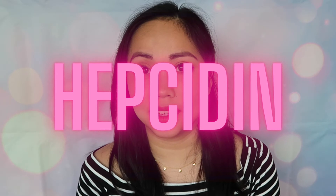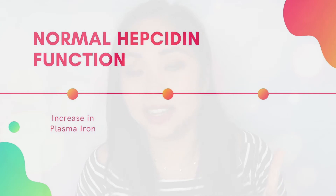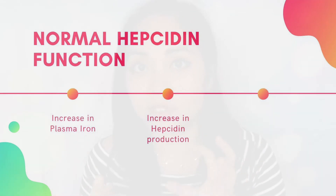Hepcidin is a peptide produced by the liver and is involved in iron homeostasis. If plasma iron is high, hepcidin production is high. Hepcidin functions to decrease the amount of iron released by macrophages or mucosal cells that contain iron. So when your plasma iron is high, your liver produces a lot of hepcidin to prevent mucosal cells from releasing more iron, since you already have a lot in your plasma. That is the function of hepcidin — it tells your cells to stop releasing iron because there's already a lot in the plasma.